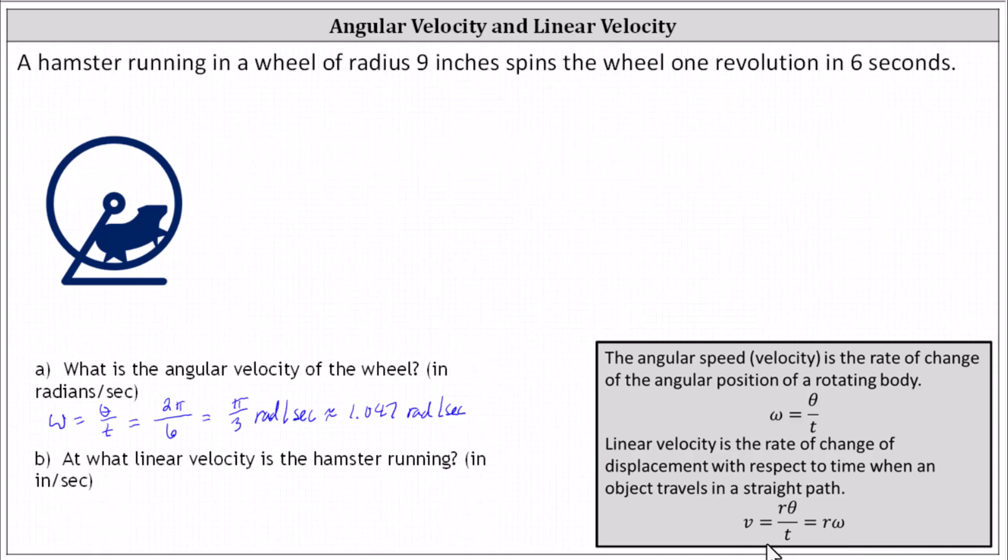Because we just found the angular velocity, we will use the formula v equals r times omega. The radius of the hamster wheel is nine inches, giving us nine inches times the angular velocity of pi divided by three radians per second. Simplifying, we have three pi inches per second.